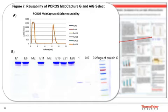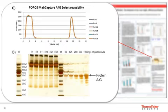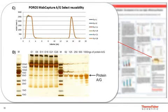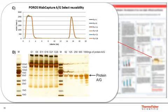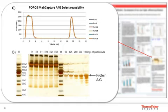We also looked at the reusability of POROS MABCapture AG-Select. Again, a 1 ml column was subjected to 26 purifications: six purifications of IgG from serum and 20 mock purifications. The first and every fifth purification thereafter, IgG was purified from human serum, with all other cycles performing mock purifications. A clean-in-place of 70% ethanol and 2 molar sodium chloride was performed after all purifications. The chromatograms of the first and 26th run were identical, and the gel by silver stain showed purity remained constant through all runs. We did not observe any noticeable leaching of Protein AG from the resin.